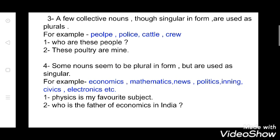Now see the third point: a few collective nouns, though singular in form, are used as plural. It means they are in singular form but they are also used in a plural form — the word is the same in both singular and plural. Collective nouns are names of a collection of persons or things taken together as a group. Examples are: people, police, cattle, crew. First example: 'Who are these people?' Second example: 'These poultry are mine.'